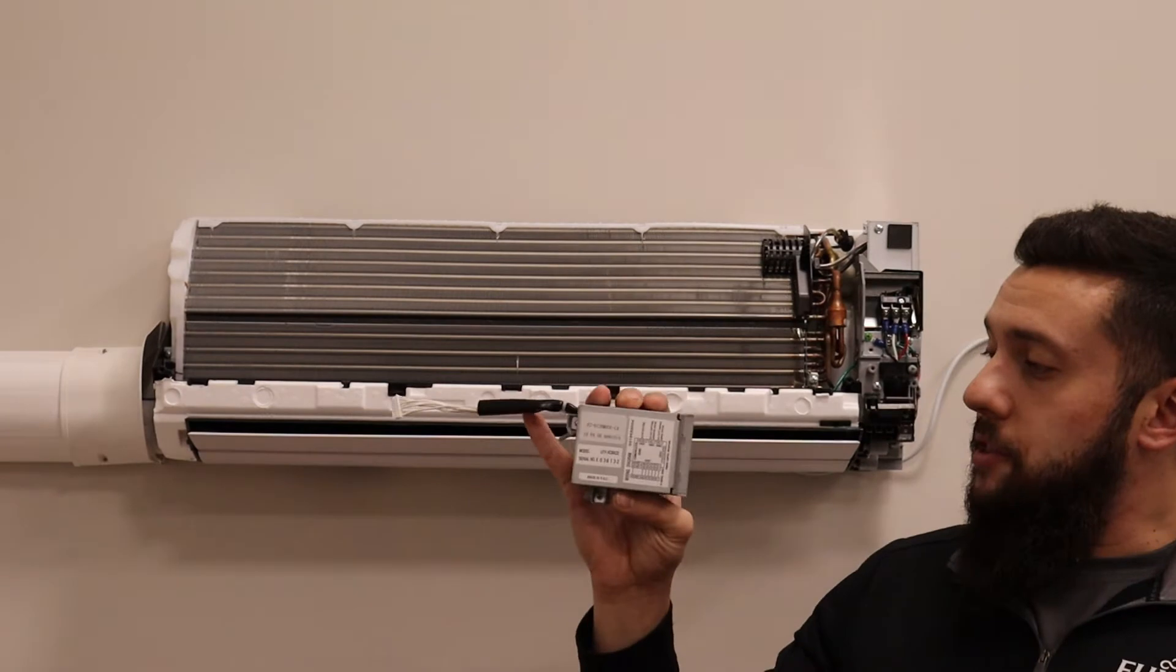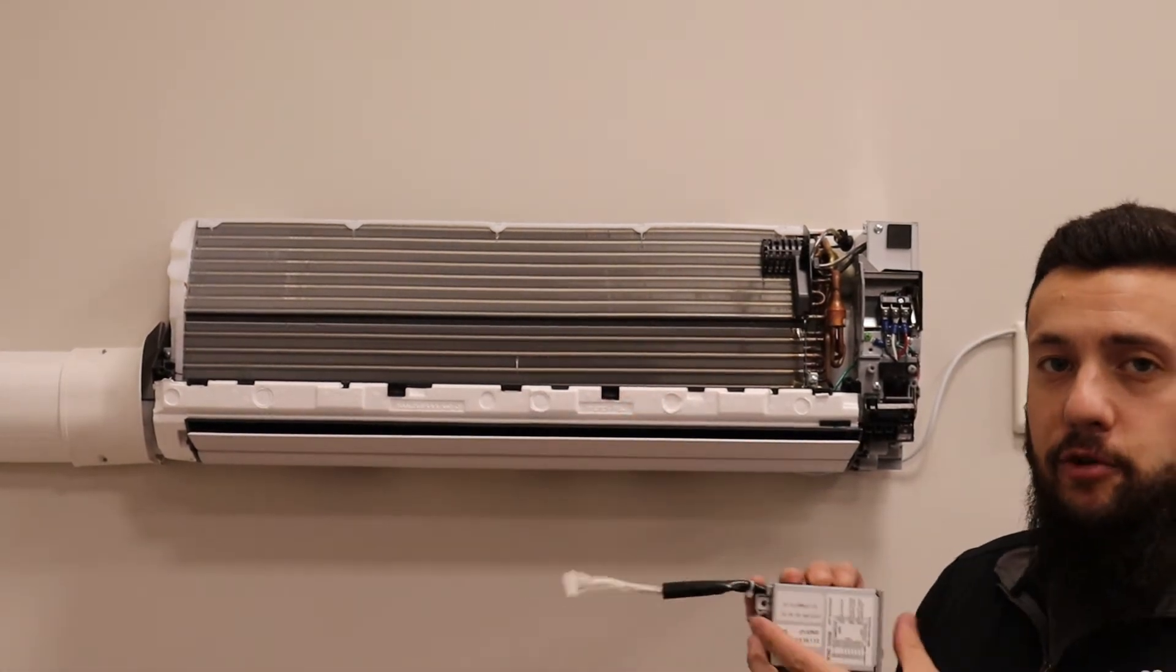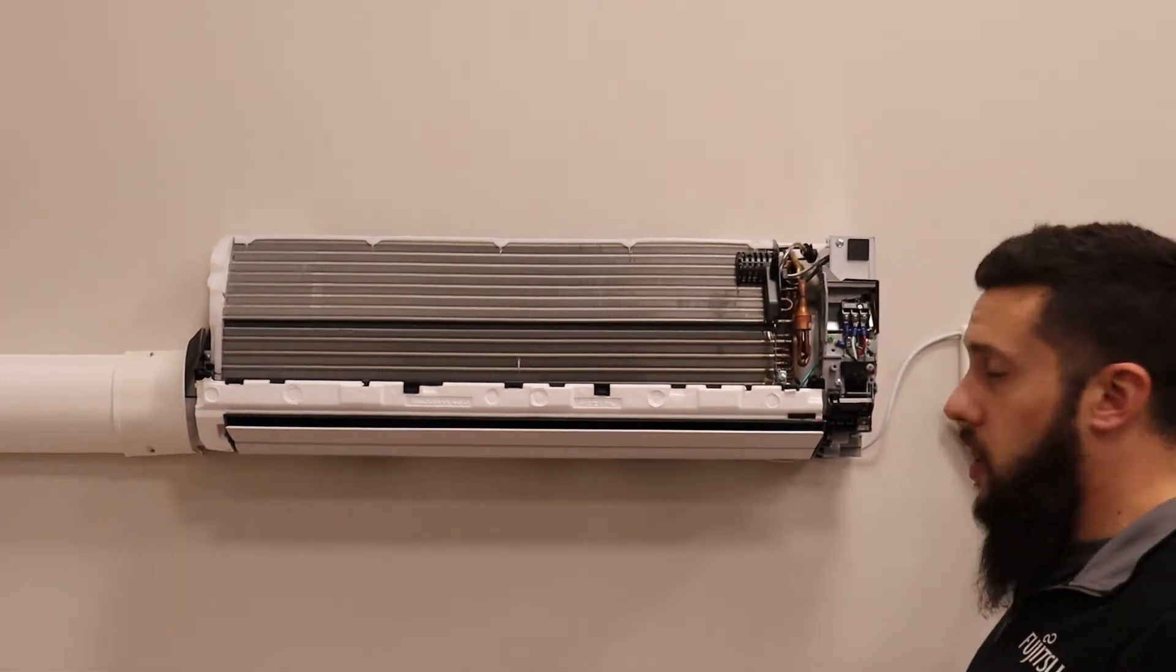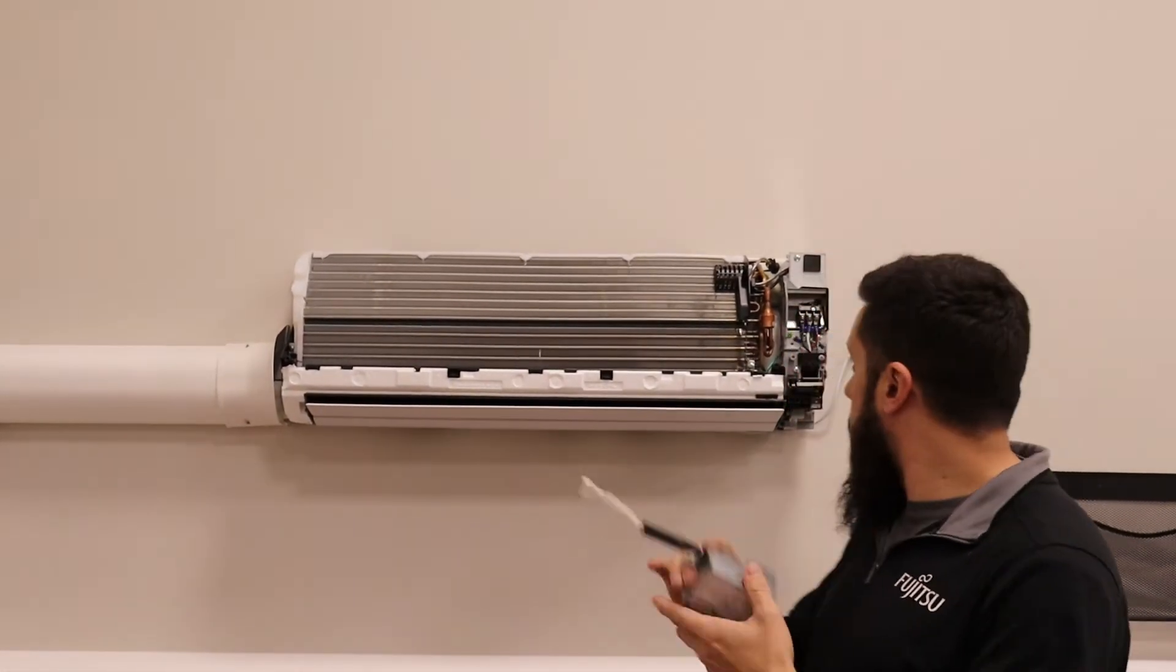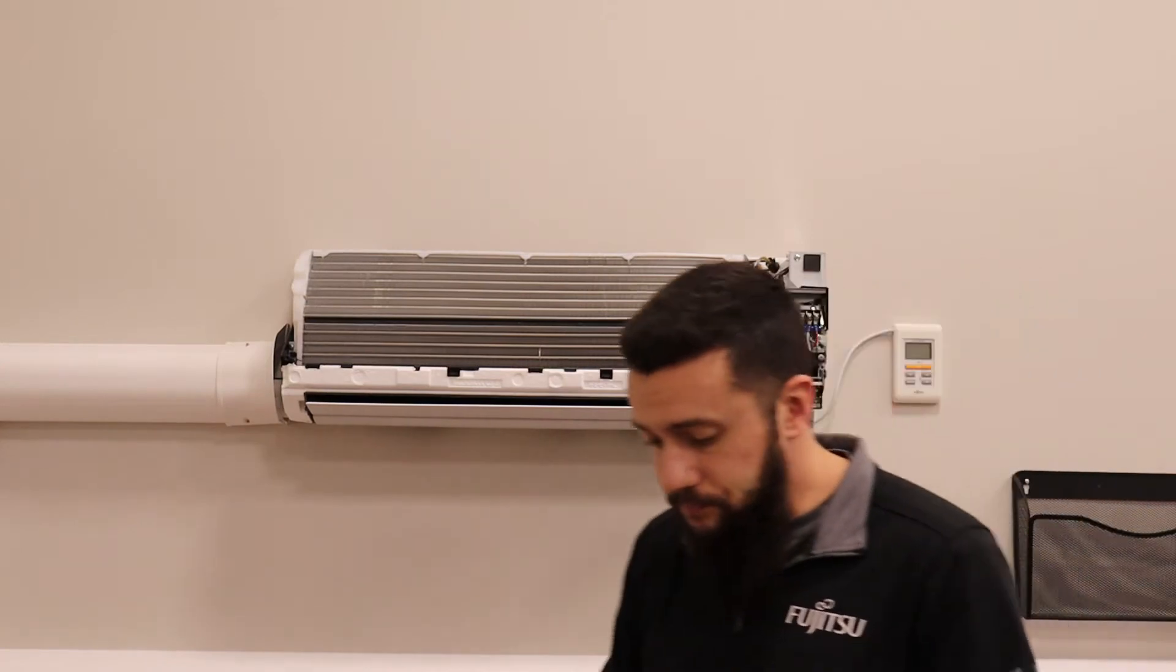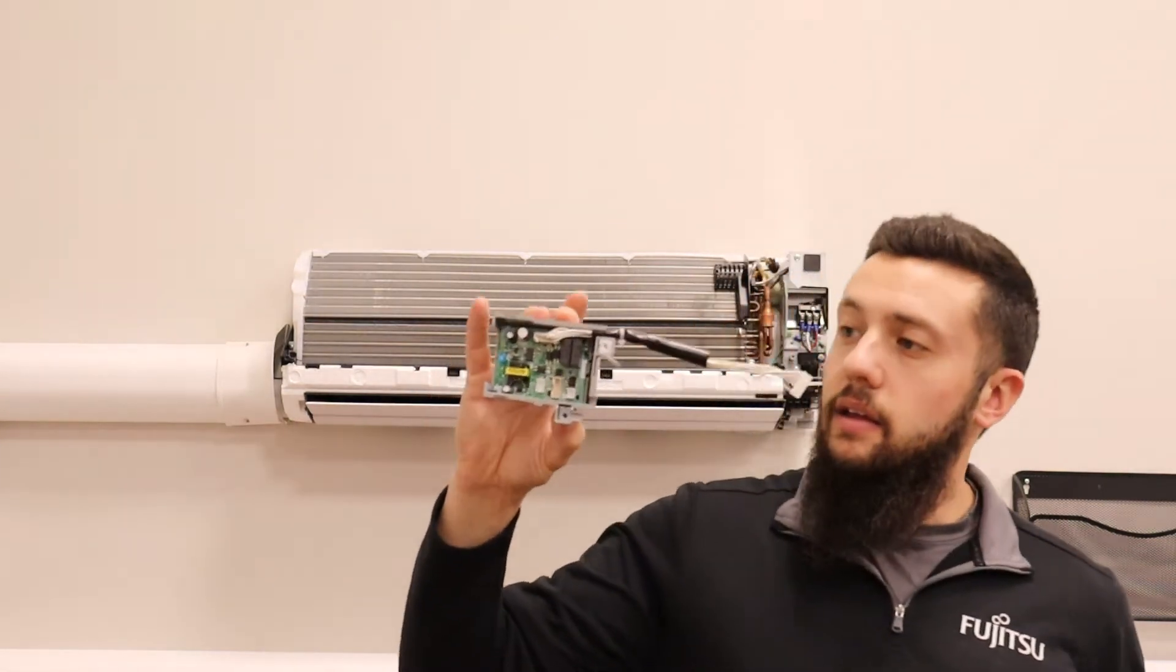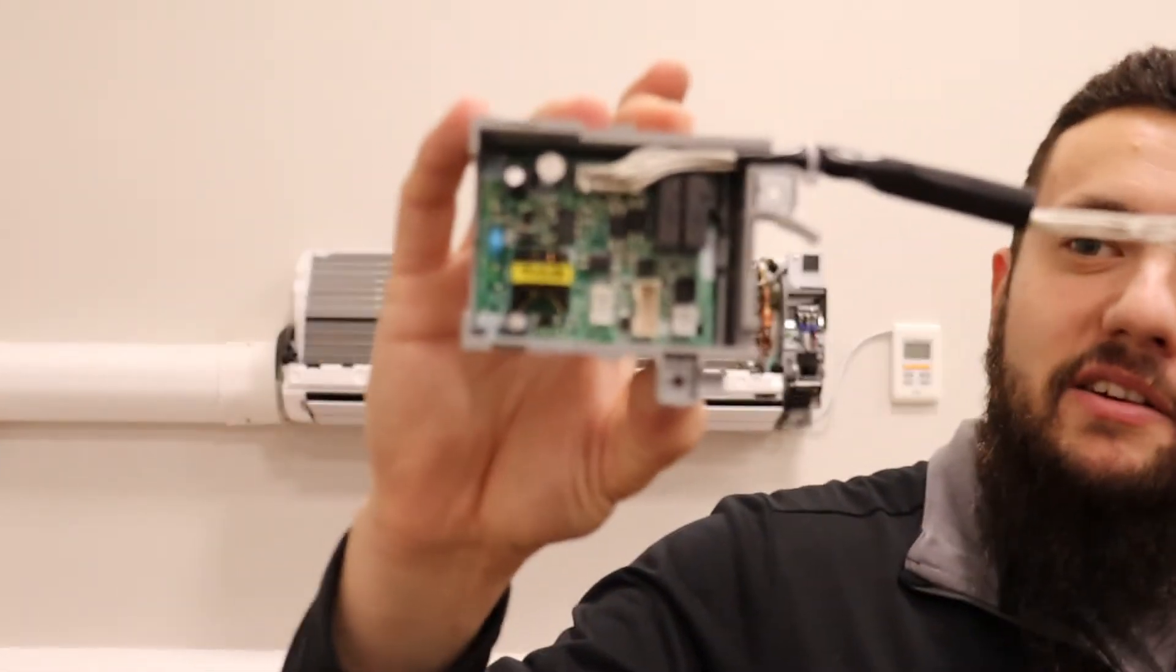So a couple of things about this interface kit—I already have one installed in this unit for this wall remote control here. I'll show you a couple things that are going to help in getting this hidden over here. So if we pop this cover off, the reason that we need this kit is there are some connectors in here. You see those white molex plugs?